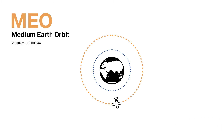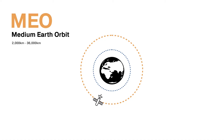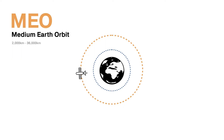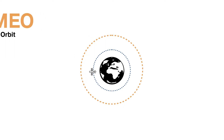Whilst LEO satellites are cheaper, you require more of them than if you used MEO. Meaning you can use 50 satellites in Medium Earth Orbit and get the same coverage as 100 satellites in Low Earth Orbit.